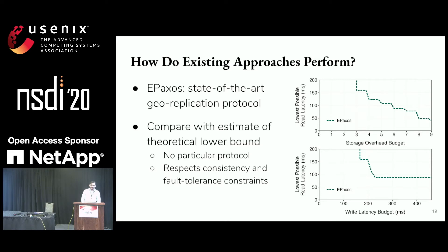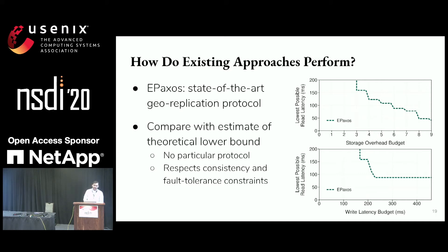For example, it's not using Paxos. Instead, we simply use a quorum-based approach that only respects consistency and fault tolerance constraints that are necessary but not necessarily sufficient to achieve linearizability and fault tolerance. In other words, this can perform better than any possible approach.